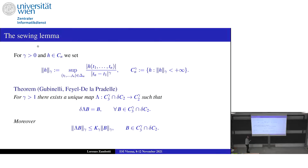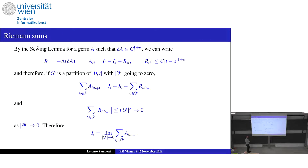Moreover, this map lambda — called the sewing map — is linear and continuous when you consider these norms, with an explicit constant. This is a map which allows you to choose a representative among all possible functions of two times whose delta is b, such that you can choose one which is in the good analytical space.